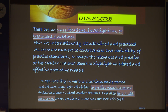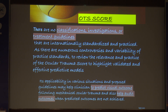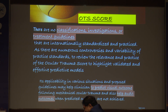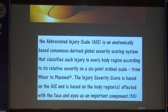The Ocular Trauma Score (OTS) is used because there are currently no internationally standardized classifications, investigations, or treatment guidelines, and there are numerous controversies and variability in practice. The OTS helps predict visual outcome and audit outcomes. There is also the Abbreviated Injury Scale (AIS), a six-point ordinal scale from minor to maximal, and the Injury Severity Score, which is based on AIS and considers body regions including the face and eyes.